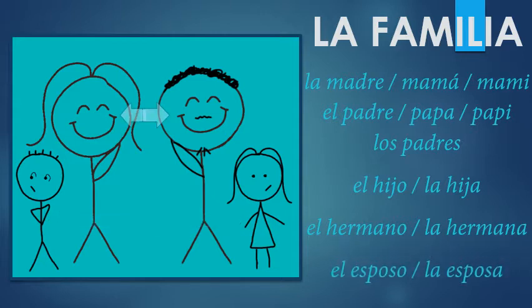Finally, husband and wife. In Spanish we go with the word for spouse. El esposo is the husband, and la esposa is the wife. Repeat after me: esposo. And for wife: esposa.